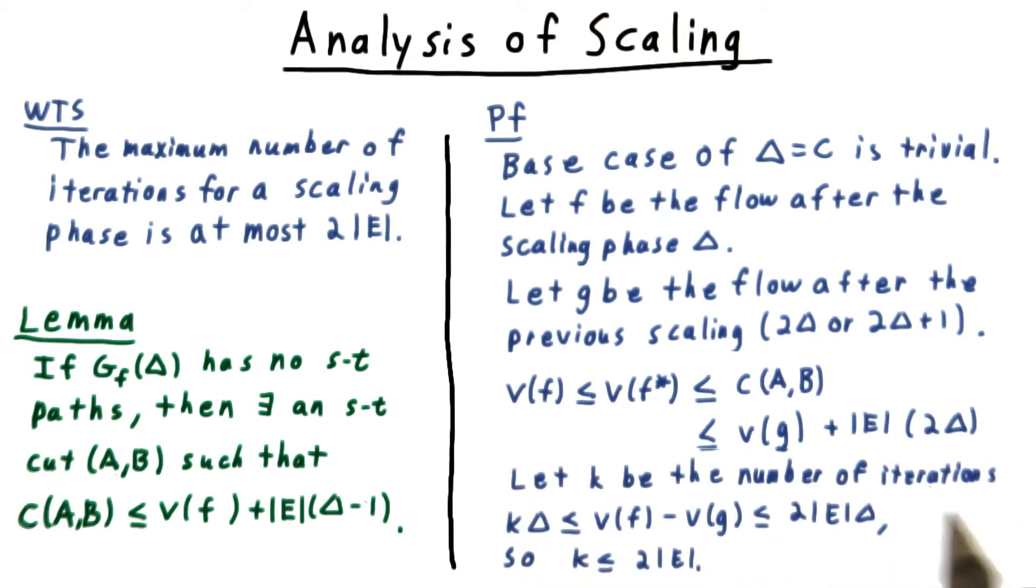Now we let K be the number of iterations that we use to go between the flow g and the flow f. Well then, K times delta is a lower bound on the difference between the value of the flow f and the value of the flow g. Each iteration increases the flow by at least delta.